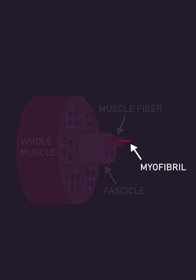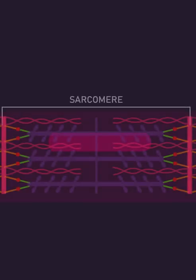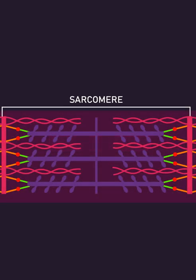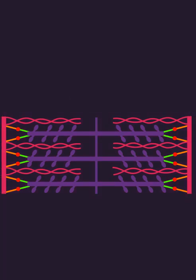Myofibrils are where the magic of muscle contraction happens. They consist of an array of sarcomeres. Sarcomeres are what generate muscle force. Here is a sarcomere, breaking down its structure.